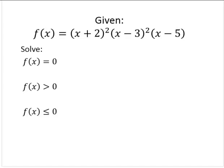The first thing we'll notice is that this is a polynomial function, and it's in its completely factored form. So to solve f of x equals 0, all we need to do is look at the three factors.